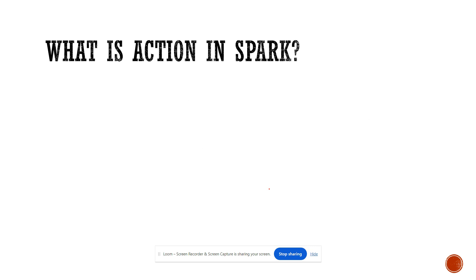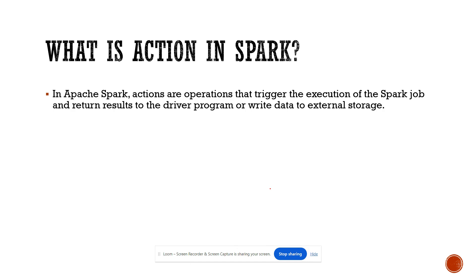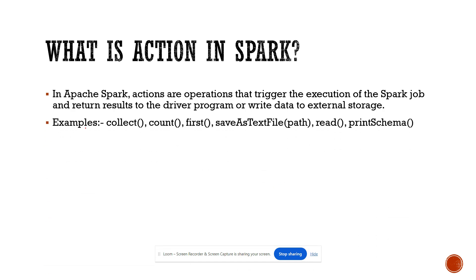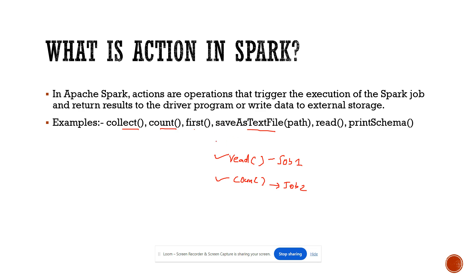An action in Spark is any operation that triggers the execution of a Spark job. Examples include collect, count, save, and read. So if you do a read operation and then a count operation, that would mean two jobs would be triggered because we have used two action operations — one is your read and another is your count. To know how many jobs there are in a given code, look for functions like collect, count, save as text file, read, and print schema — these are all action operations in Spark.